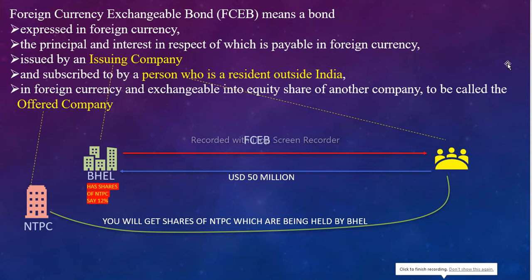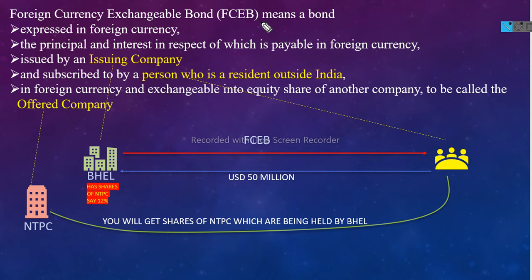Hello to everyone. Aaj hum log discuss karte hain Foreign Currency Exchangeable Bond. Foreign Currency Exchangeable Bond means a bond expressed in foreign currency, the principal and interest in respect of which is payable in foreign currency, issued by an issuing company and subscribed to by a person who is resident outside India, in foreign currency and exchangeable into equity shares of another company, to be called the Offered Company. Example lekar ke chalte hain.